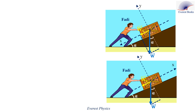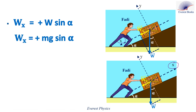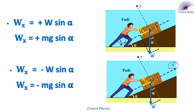In order not to confuse, let's study these two figures. In the first figure, the x axis is oriented positively downward, so Wx is oriented positively along the x axis and Wx is positive, equal to W sine alpha or mg sine alpha. In the second figure, the x axis is oriented positively upward, so Wx is oriented along the negative x axis and is negative, written as minus W sine alpha, which equals minus mg sine alpha.